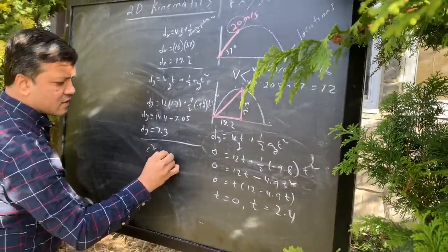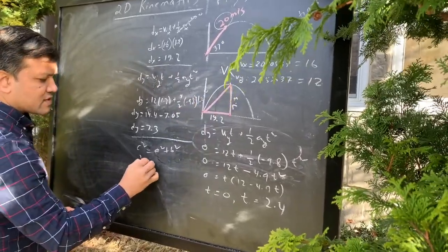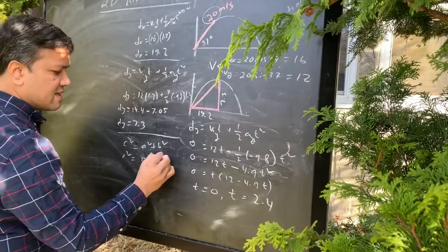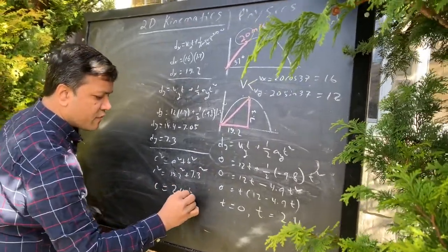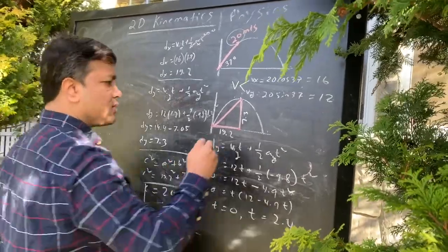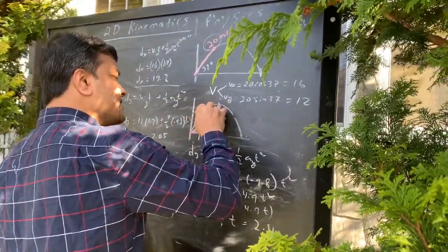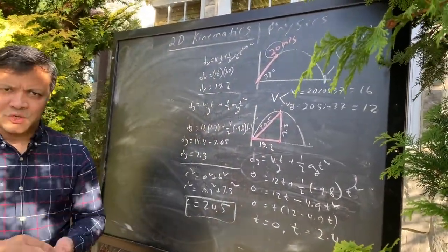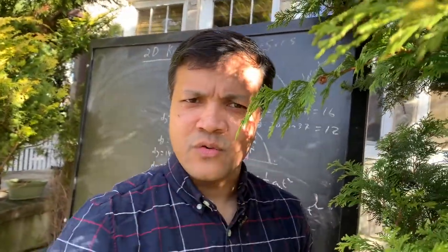Now you know dx and dy, so you can use the Pythagorean theorem: c² = a² + b². The red line c² = 19.2² + 7.3², so c = 20.5. The red line is 20.5. This is the regular physics approach. Now I'm going to show you the way that has never been done before, and you will hopefully fall in love with physics.